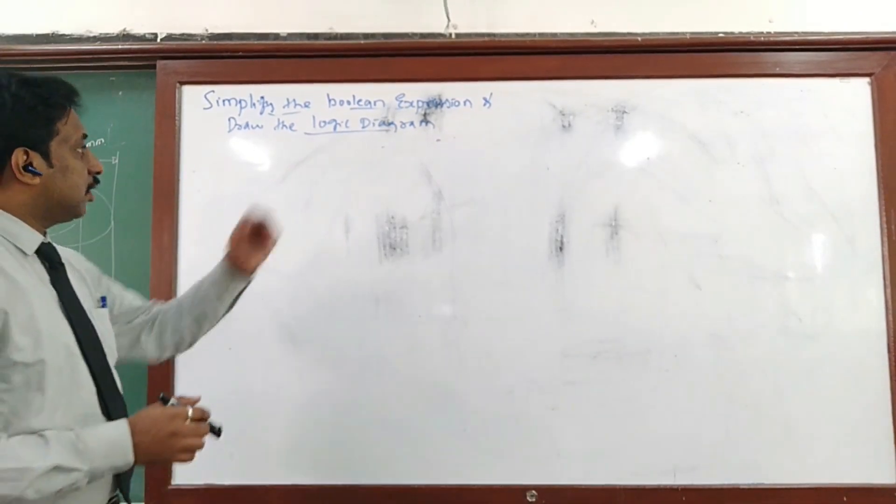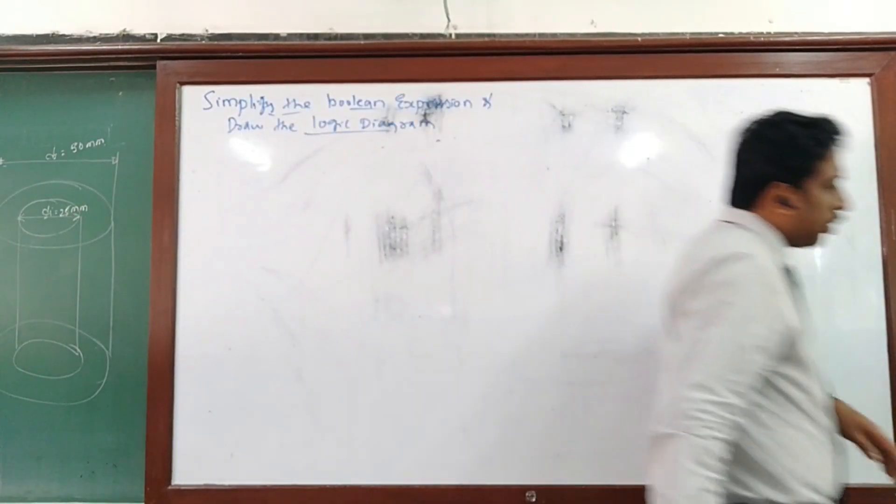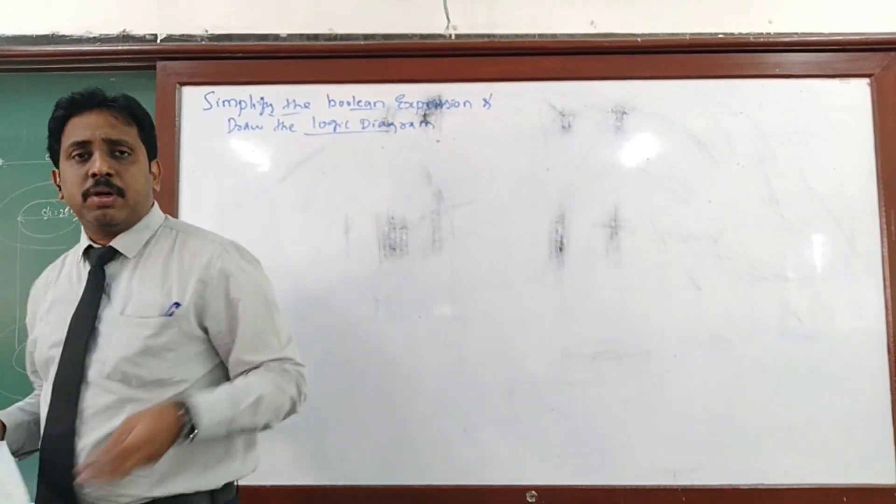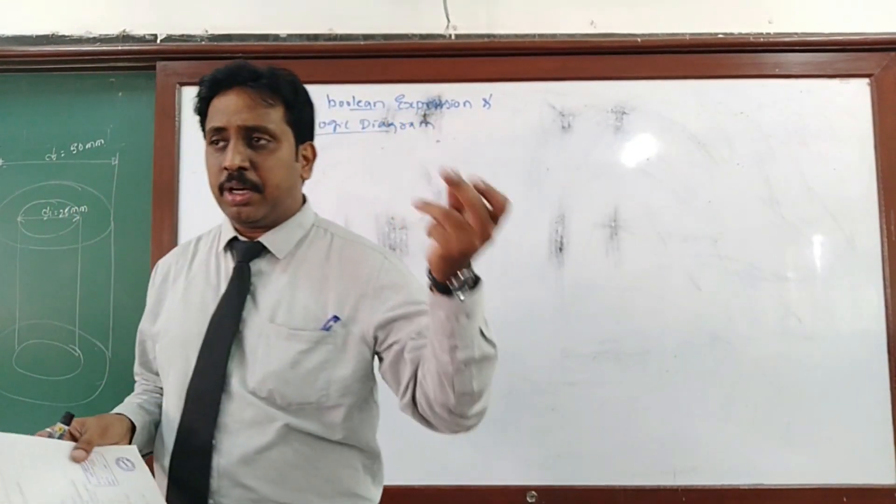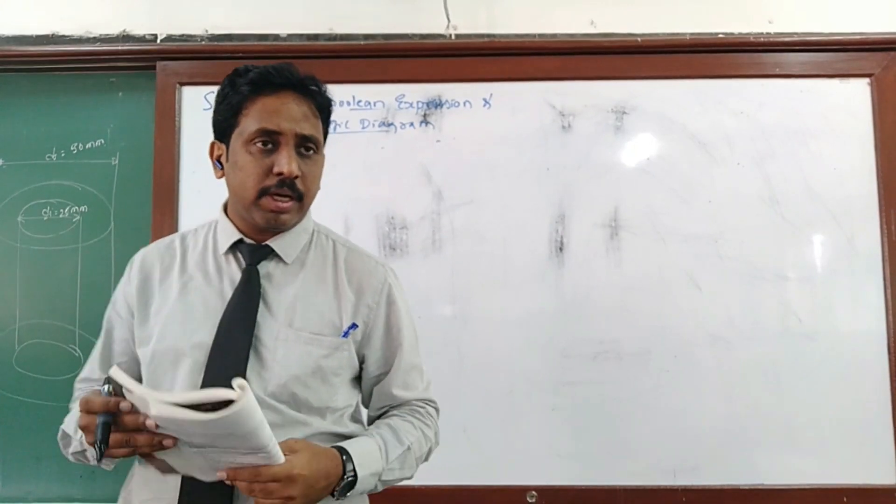So we will solve the simplifying the Boolean expression, solve some expression. In the exam you can ask for 2 to 4 marks. Complexly, simply. You will say 5 marks.